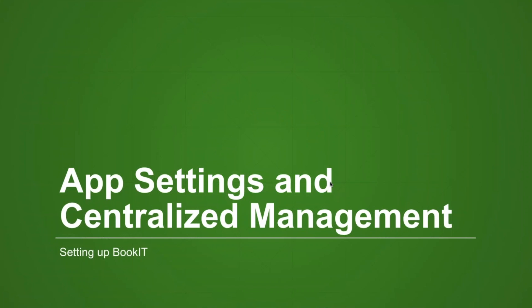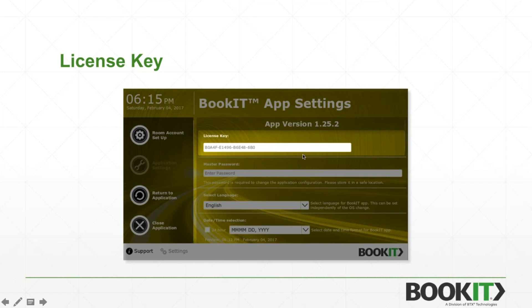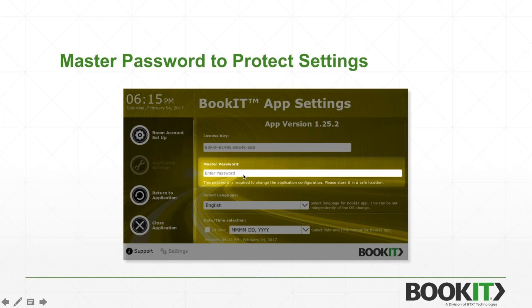There are many configurable settings in BookIt. The settings area always shows your license key for reference. You can set a master password, which I highly recommend, as it controls access to the settings area. When BookIt launches, it will ask if you want BookIt to be the launcher app — answer yes, and users won't be able to shut BookIt down or navigate away from it without knowing the password to get into settings.